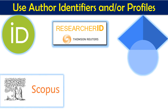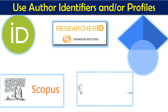The fourth identifier is Scopus, which belongs to Elsevier. Scopus automatically assigns a unique author identifier to all authors of content in the Scopus database and generates a publication list associated with each identifier. If you have an ORCID ID, Scopus will automatically keep your ORCID bibliography up to date — you don't have to do anything manually. The last identifier in this category is Vidwan, which is a database of the national researchers network started by the Ministry of Education of the Indian government. You can create your ID there and all your research profiles will be visible to everyone.